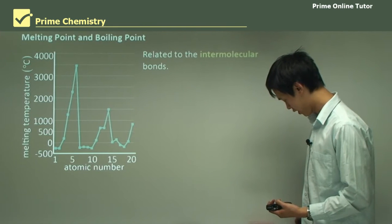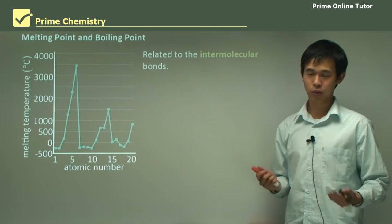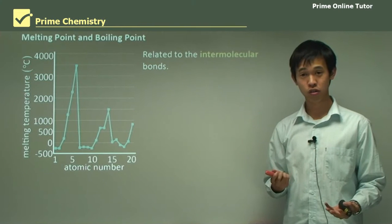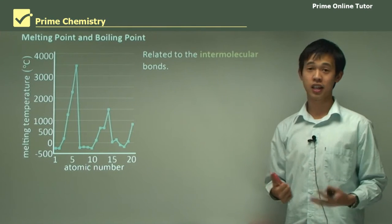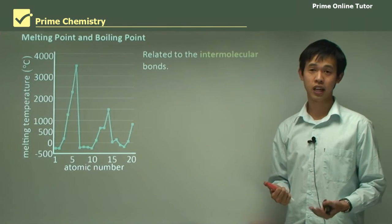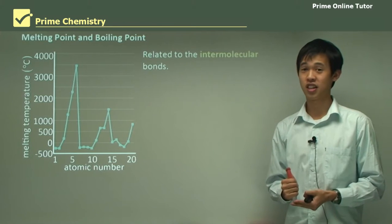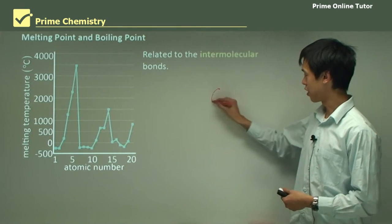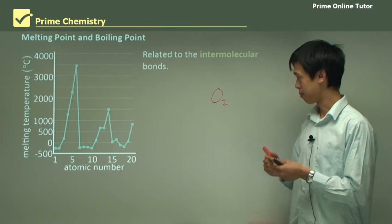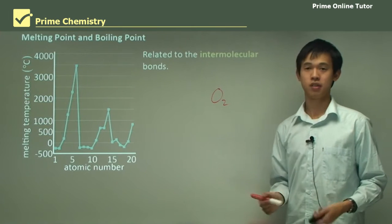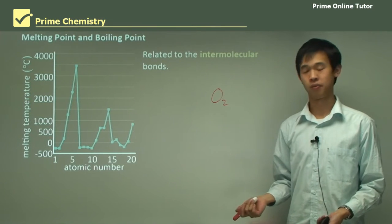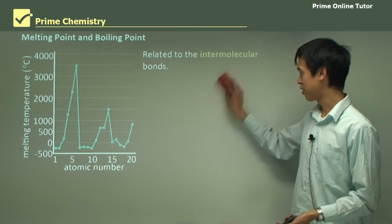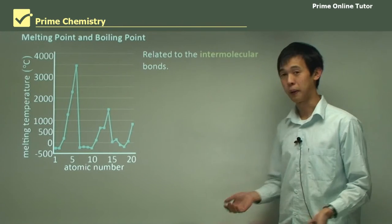Now the question is — well, we're talking about elements, why do I talk about molecules? Well, because molecules can include elements as well. It's just another word for particle. For instance, O2 is a molecule but it's also the elemental form of oxygen. So we can use the word molecule interchangeably.